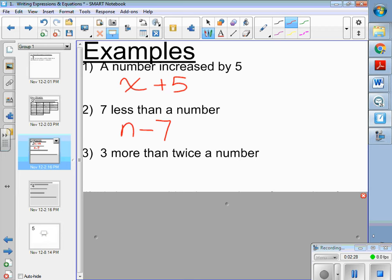Three more than twice a number. So twice a number would be two times your variable, and then three more than that.